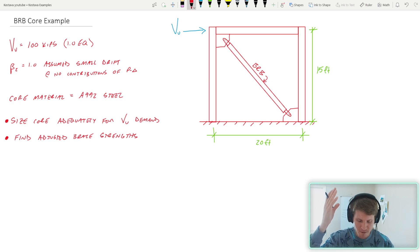We have our beautiful BRBF figure right above there, as well as a story demand V sub U of 100 kips. That's 1.0 earthquake contribution. We have beta sub 2 equal to 1.0. So we are, for today's example, keeping it simple and assuming very small drifts and therefore no contributions from P-delta effects.